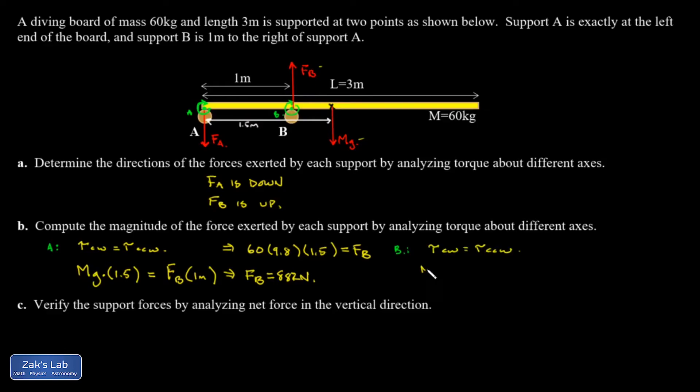My clockwise torque, again, that's gravity acting at the center of mass. And I have to do a little bit of calculation here to figure out what's the distance between the center of mass and my rotation axis. And if it's 1.5 meters from the left end to the center of mass and one meter between A and B, it leaves a half meter here for the lever arm.